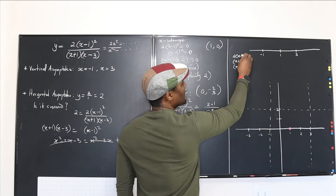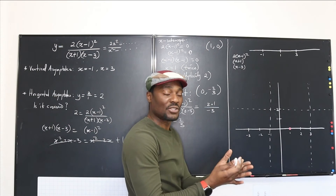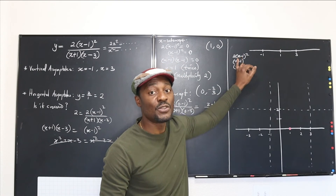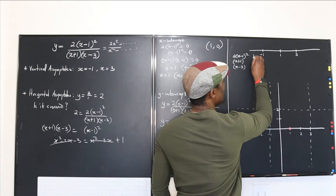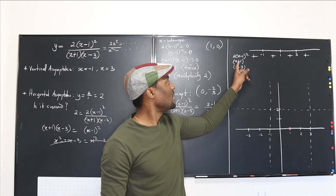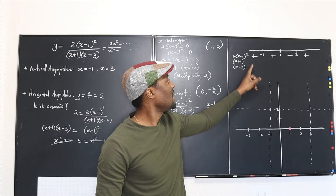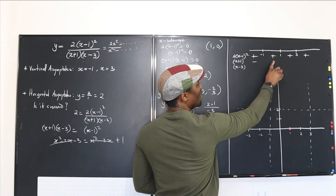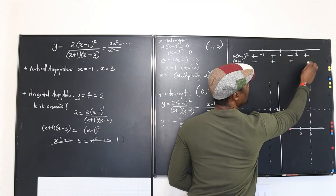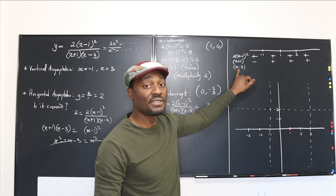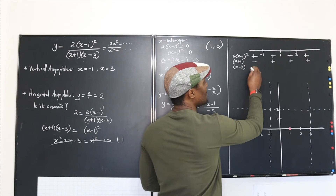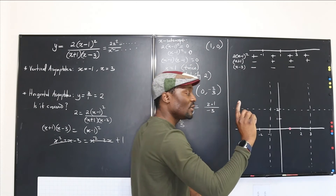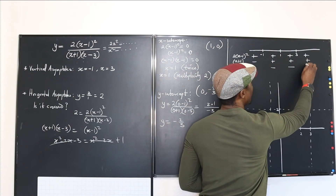Because (x minus 1) squared always gives a positive result no matter what x minus 1 is — for example, plugging in negative 2 gives negative 3, and squaring gives positive — so this component is always positive across all regions. For (x plus 1): picking negative 2 gives negative 1, so it's negative before x equals negative 1; picking 0 gives positive 1, so it's positive from negative 1 onwards. For (x minus 3): it's negative before x equals 3, and only positive when x is greater than 3.